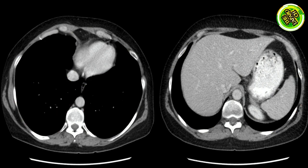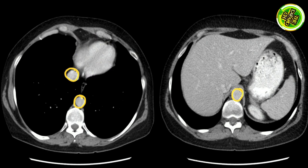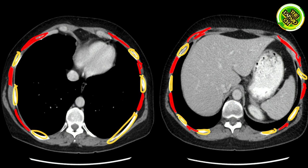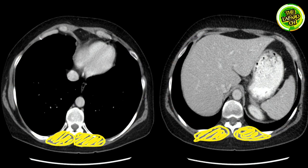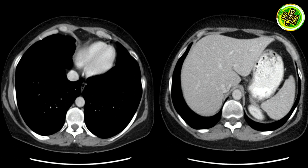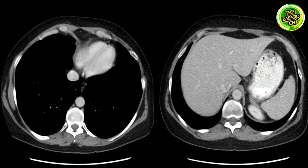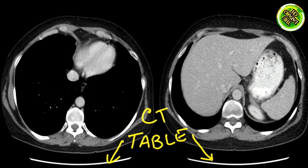In addition to the lungs, the left image also shows the base of the heart, great vessels, ribs, intercostal muscles, and erector spinae muscles. On the right side, the spleen and stomach are visible. The stomach is filled with oral contrast. The thin line all around is the skin — epidermis and dermis — and in between there is a fat layer. Anything else is outside the body.